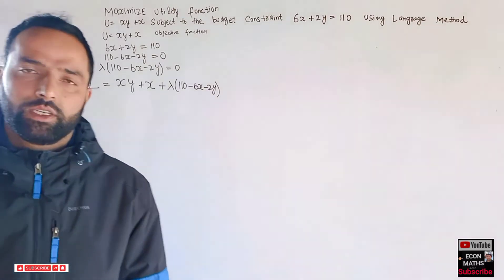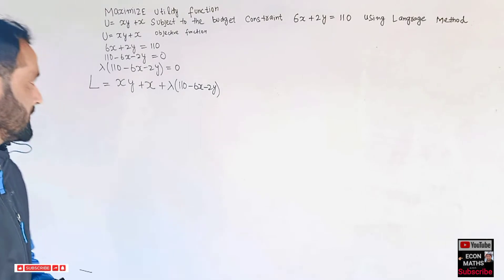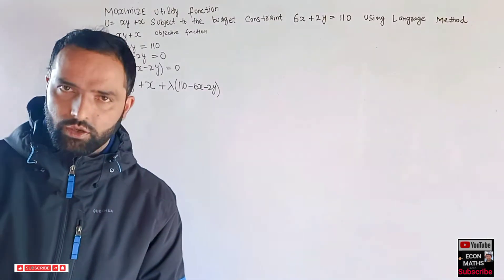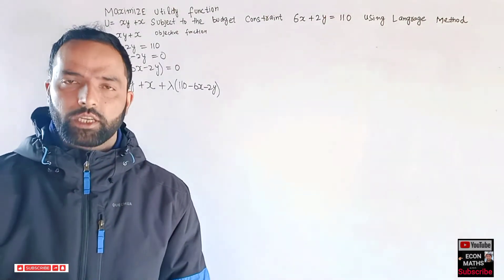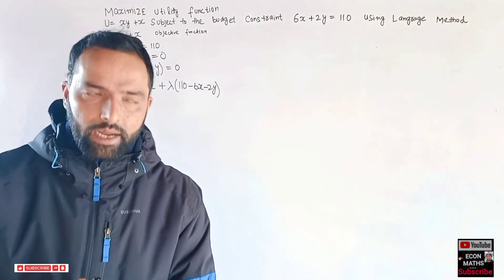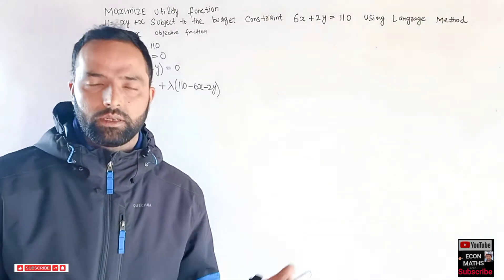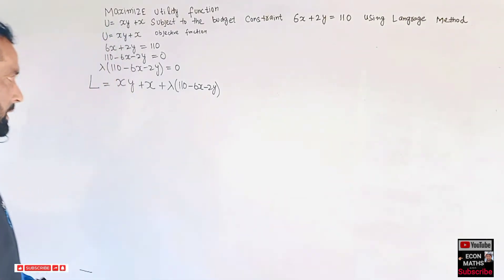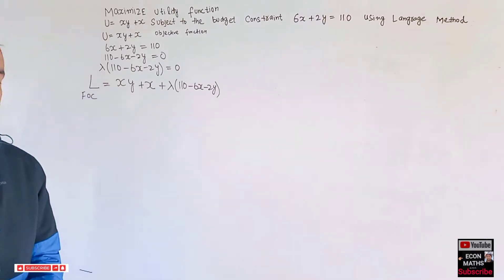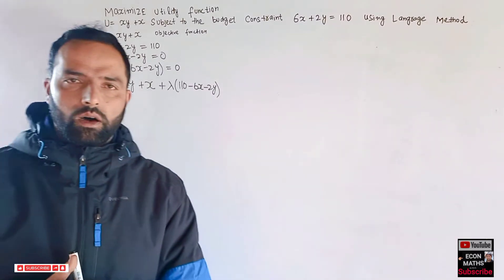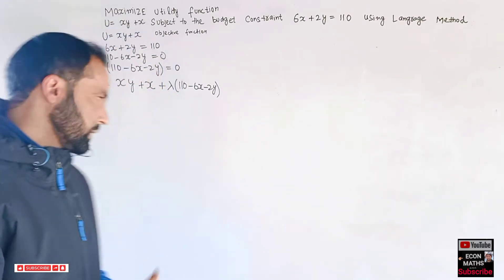The first-order conditions for maximization require that we take the partial derivatives of this Lagrangian function with respect to x, y, and lambda, and set them equal to zero.